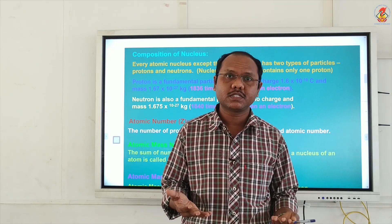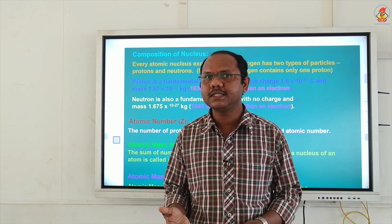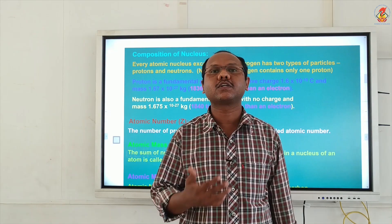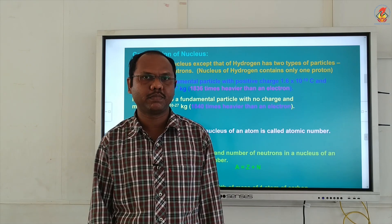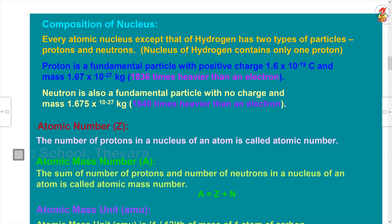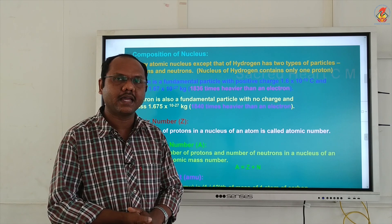Now, what about electrons — are electrons included in the nucleus? No, electrons are revolving around the nucleus in different orbits. A proton is the fundamental particle with a positive charge of 1.6 × 10⁻¹⁹ coulombs, and the mass of a proton is 1.67 × 10⁻²⁷ kilograms. Those values you have to learn by heart — its charge and mass.